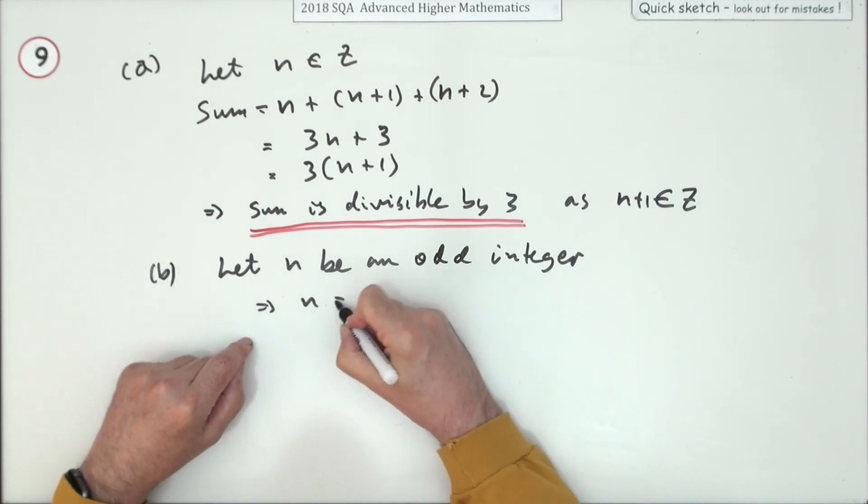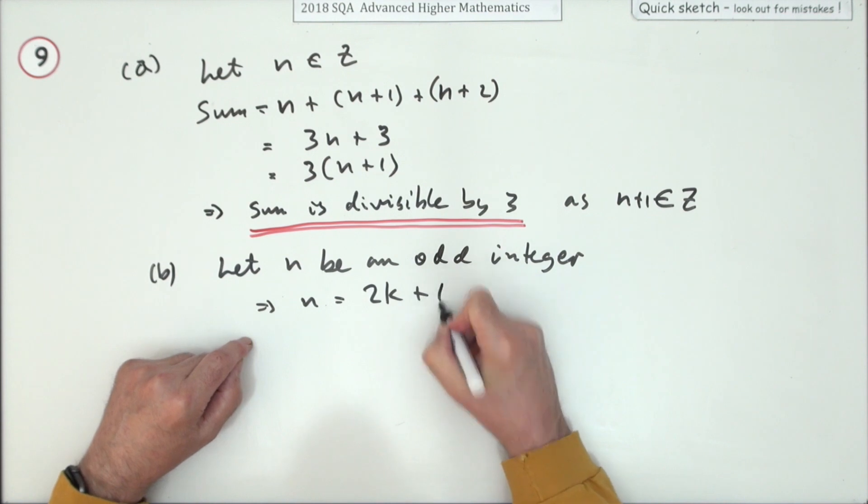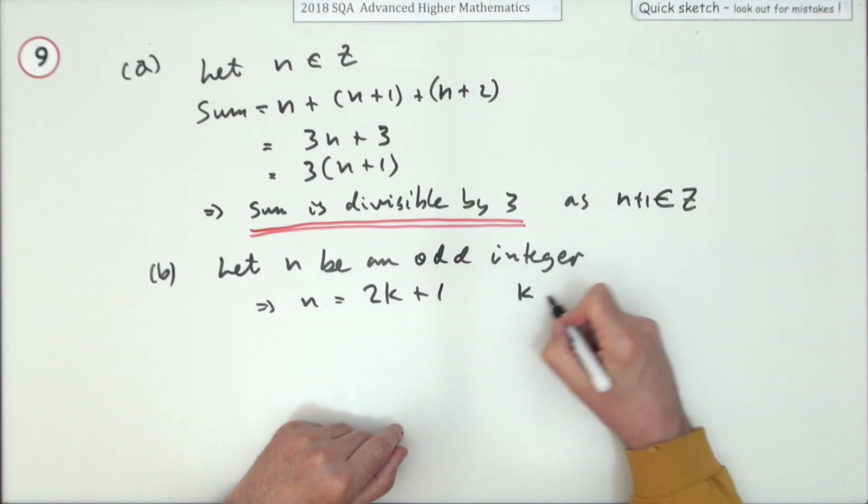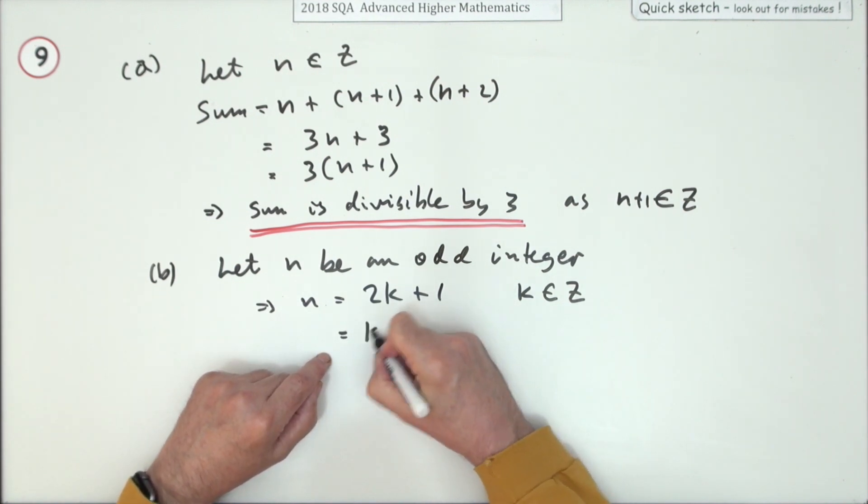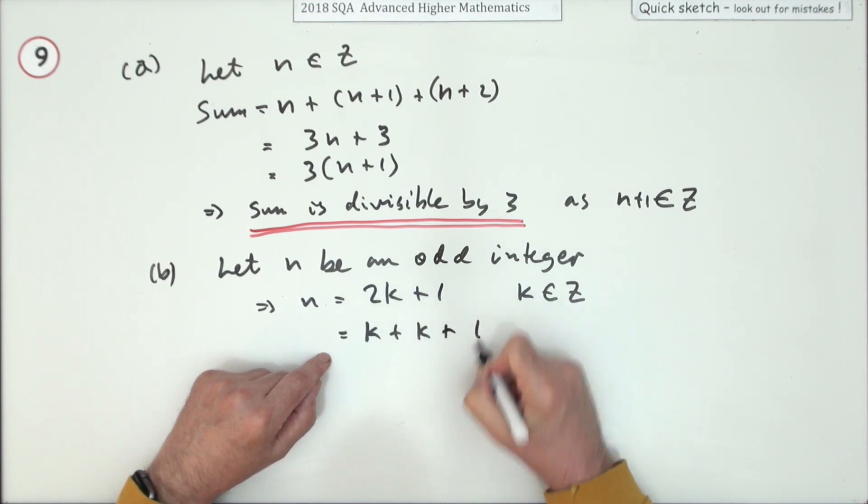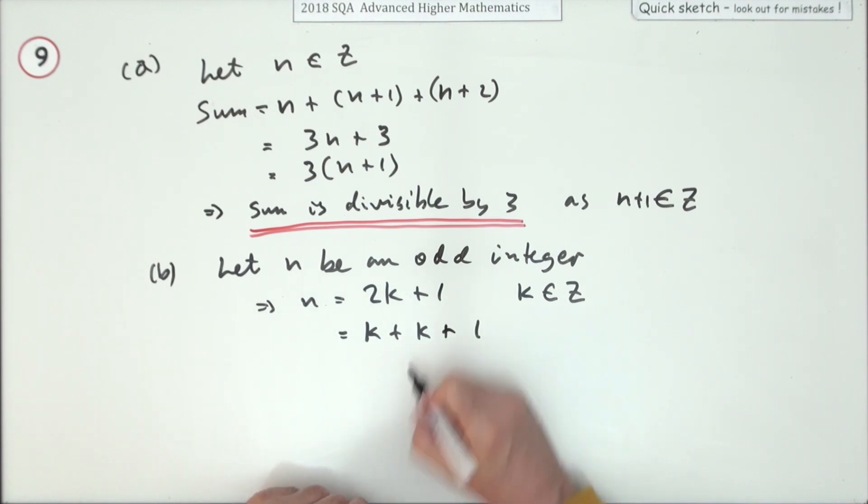Which means that n can be written as two k plus one, where k is still an integer. Now two k plus one is simply k plus k plus one, and I'll just bracket that bit off, which equals...